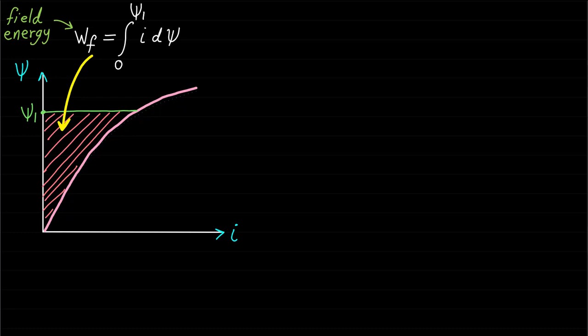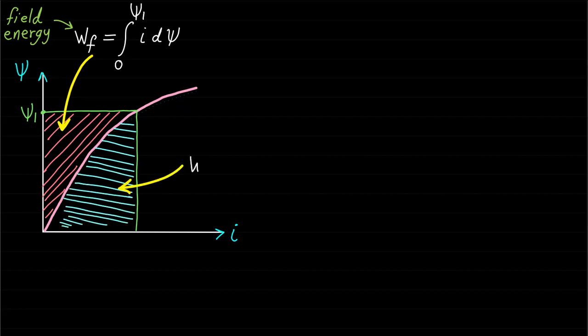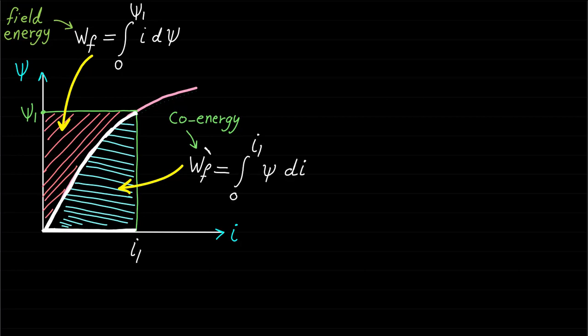Now let's introduce one more term called co-energy. The co-energy WF' represents the area between the curve and the current axis I. The co-energy does not have any physical significance or physical meaning. However, the co-energy can help mathematically in identifying the force and the torque of electromechanical systems.